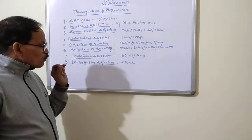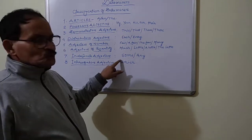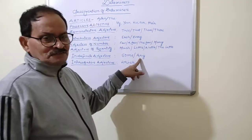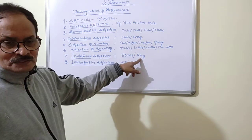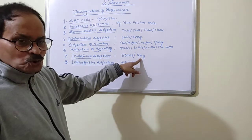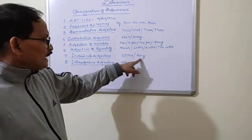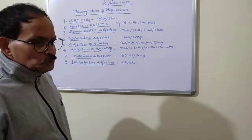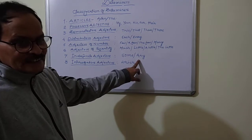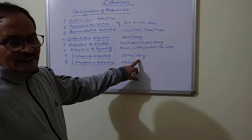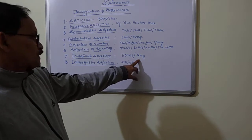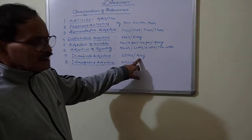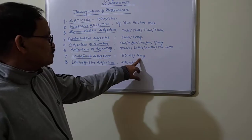An important point: 'some' is used along with affirmative sentences, and 'any' is used along with interrogative and negative sentences. For example, 'do you have any book in English?' — here 'any' is used to make the sentence interrogative. 'You don't have any book in English' — the sentence is negative and 'any' is used to indicate the number or kind of book. So, some is used with affirmative sentences and any is used with negative as well as interrogative sentences.